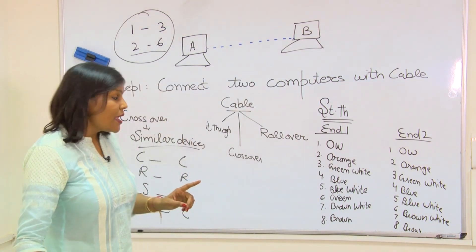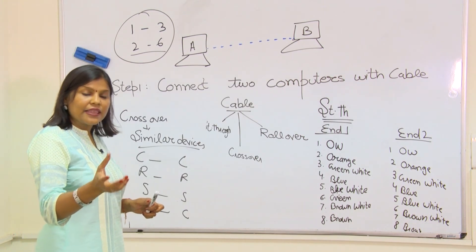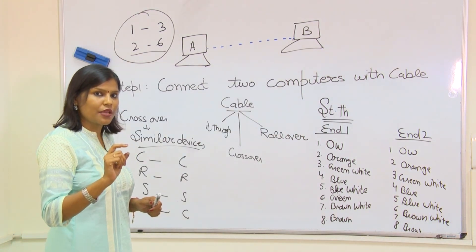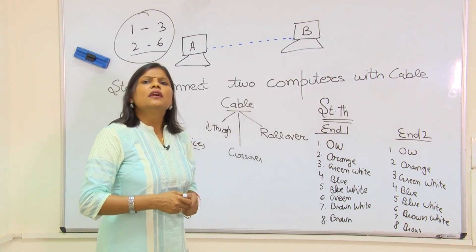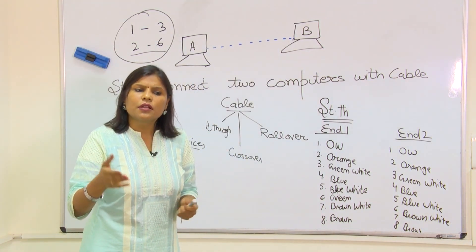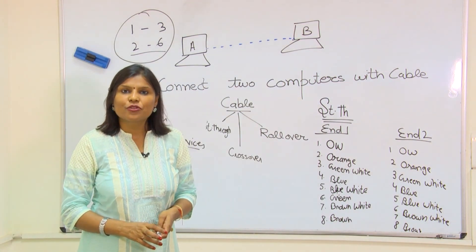So that is why computer and PC, if they are connected, then we have to use a crossover cable. But in straight through cable, that is computer to hub, hub to router, router to switch, any different devices, we will use straight through cable.